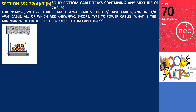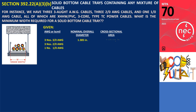Let's have an example. We have three 3-aught AWG cables, three 2-aught AWG cables, and one 1-aught AWG cable, all of which are XHHW, PVC, 3-core, type TC power cables. What is the minimum width required for a solid-bottom cable tray? The overall cross-sectional area for the 3-aught AWG cables is 4.42 square inches, for the 2-aught AWG cables is 3.85 square inches, and for the 1-aught AWG cable is 1.105 square inches.